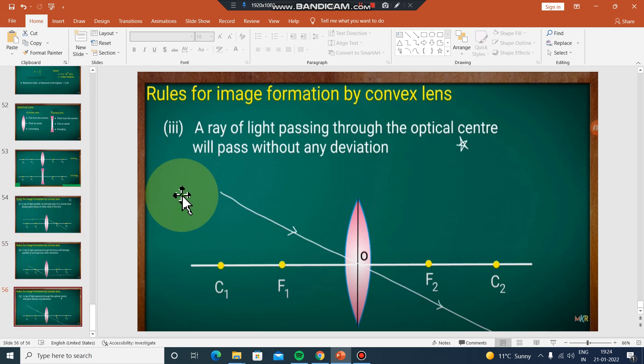Third rule: a ray of light passing through the optical center will pass without any deviation. In mirrors it reflects, but in lenses it refracts. When it passes through the optical center, it will pass straight through without bending - this is the optical center. So a ray through the optical center passes without refraction, going straight through.